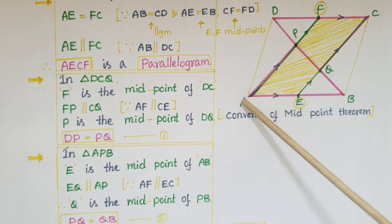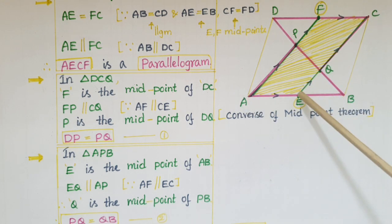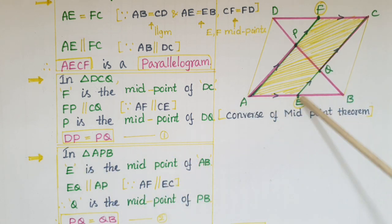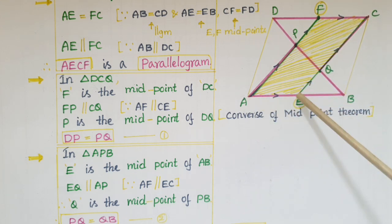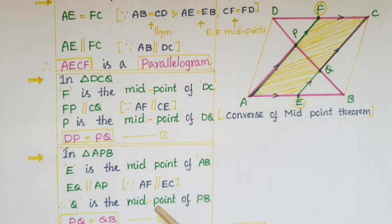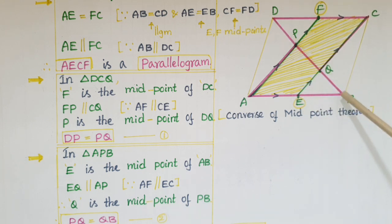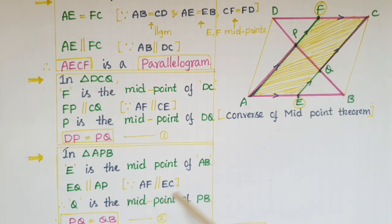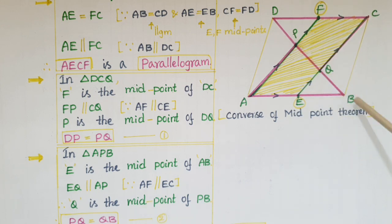Next, consider triangle APB. Here, E is the midpoint of side AB — given in the problem — and EQ is parallel to AP because AECF is a parallelogram, so those two sides are parallel. By the converse of the midpoint theorem, this line bisects the third side of the triangle, which is PB. So Q is the midpoint of PB, meaning PQ is equal to QB. This is the second equation.